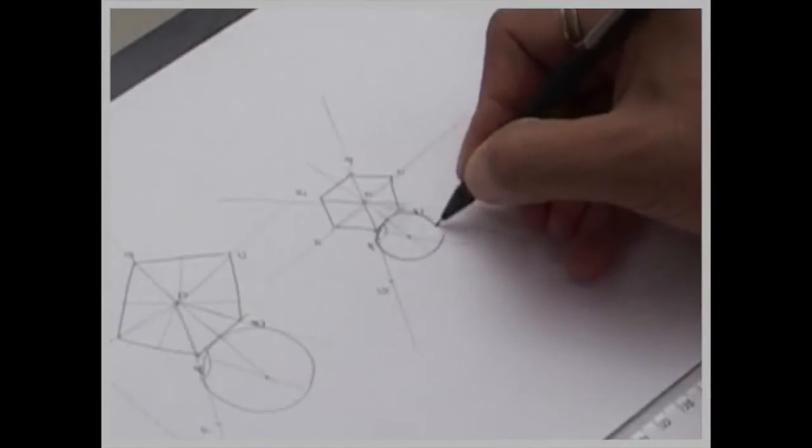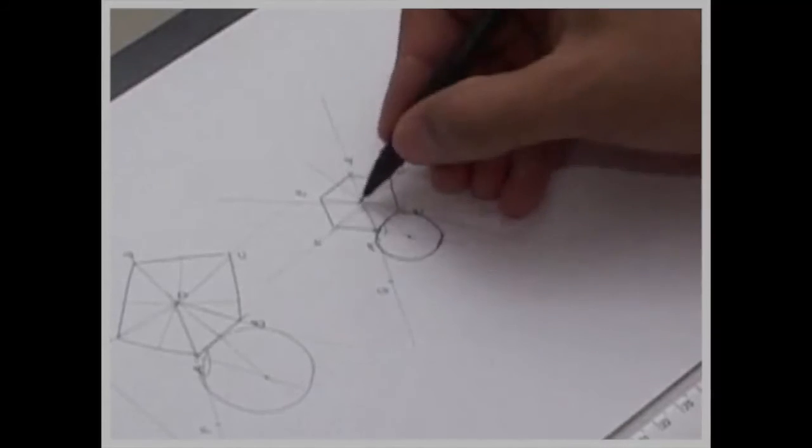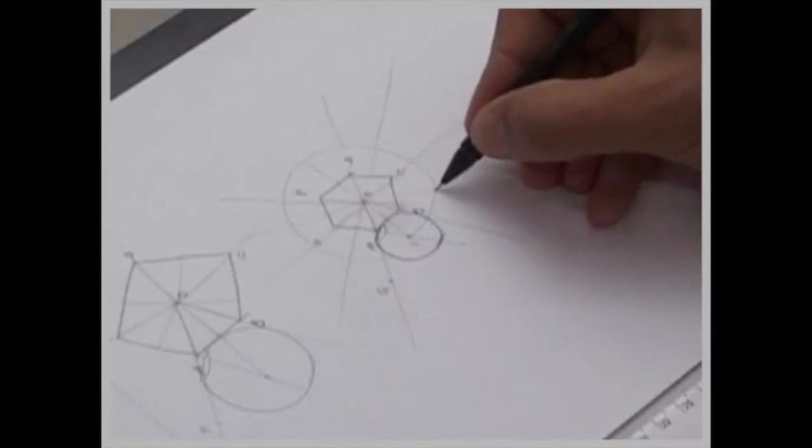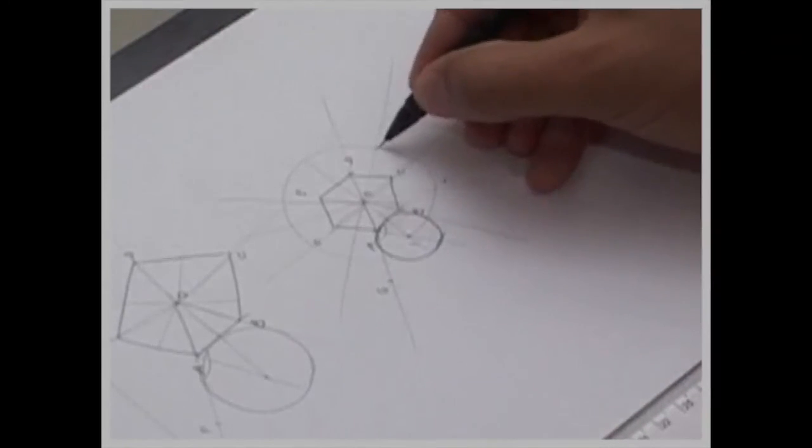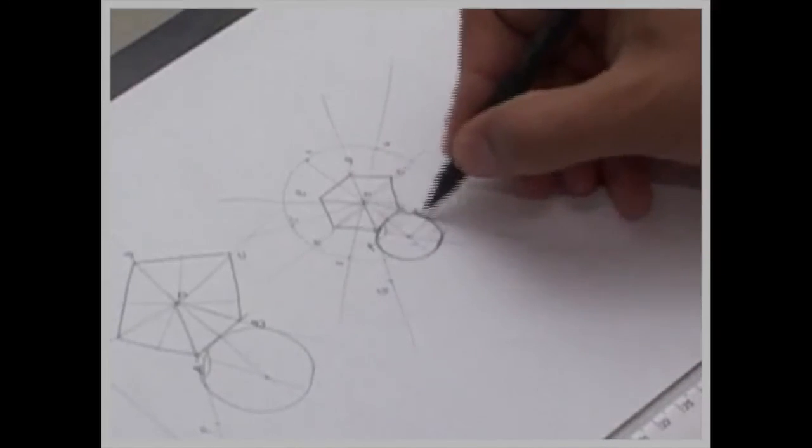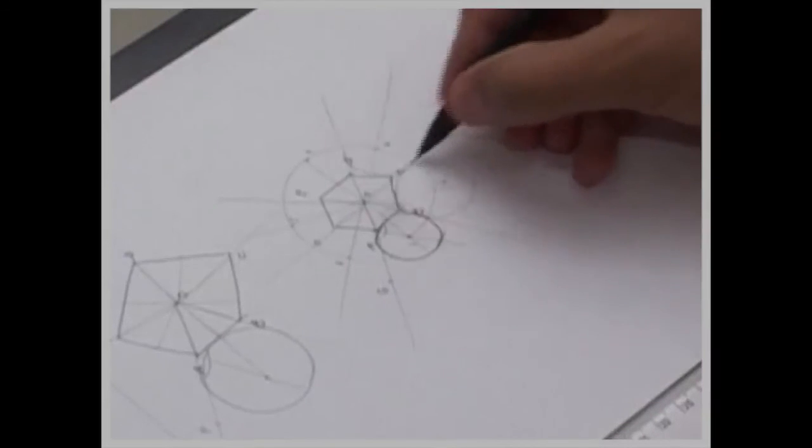In the same way, you take O to 1, draw circle. From there 2, 3, 4, 5, 6. You draw other circles as well.